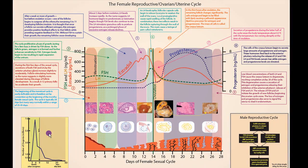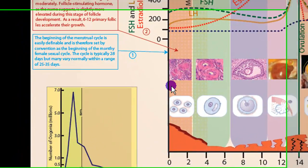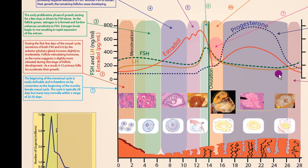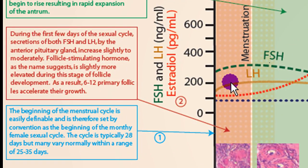Let's now go through the sexual cycle and point out several of the landmarks. We're going to start at day zero, which is set by convention as the beginning of the monthly cycle. It has an easily visible landmark: the presence of menstruation. So the beginning of the female sexual cycle is set at the beginning of the menstrual cycle because it's an easily definable landmark. We've already started a rise in FSH and LH toward the end of the previous cycle, and those are being stimulated by the hypothalamus through the anterior pituitary via gonadotropin-releasing hormone.